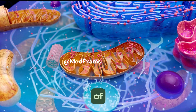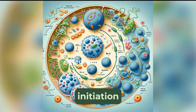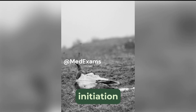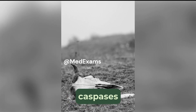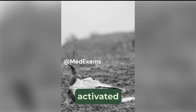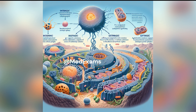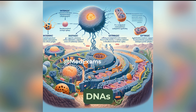The process of apoptosis is separated into an initiation phase and an execution phase. During the initiation phase, protein-hydrolyzing caspases are activated. In the execution phase, these caspases bring about cell death by cleaving cellular proteins and activating DNases.